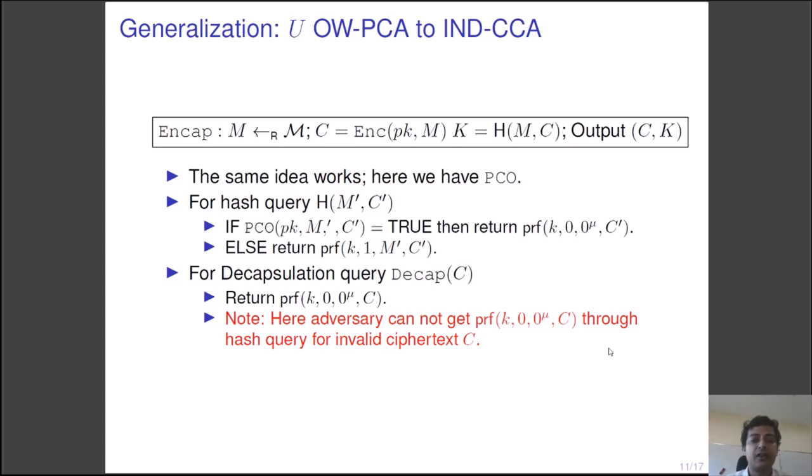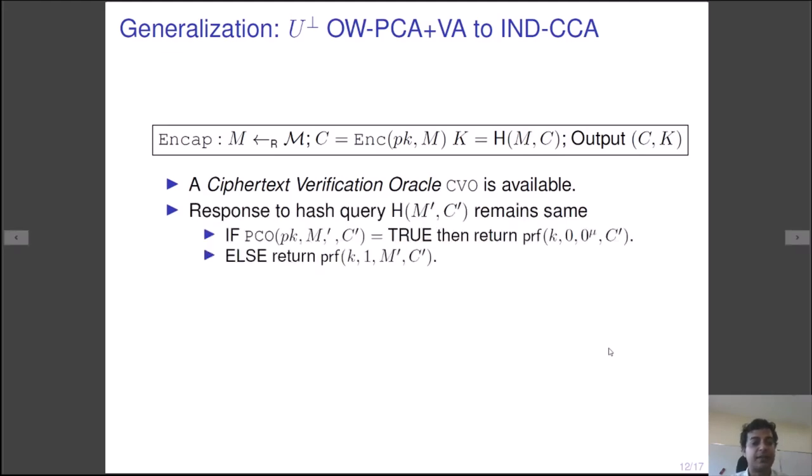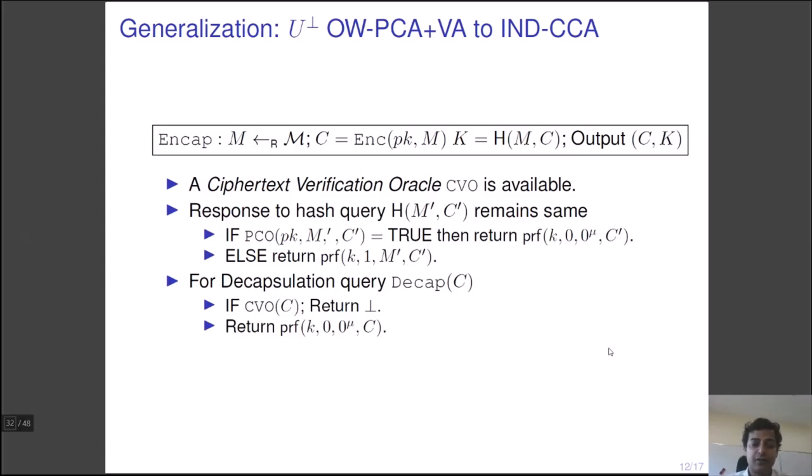However, note that the whole thing works because the adversary cannot compute the PRF on this k_0 to the power mu and c through hash queries for invalid ciphertexts. The generalization to U part is simpler. Here the reduction has a ciphertext verification oracle. The hash simulation is same as before. However, for the decapsulation simulation, we can use the ciphertext verification oracle and return a random value in case the input is an invalid ciphertext.